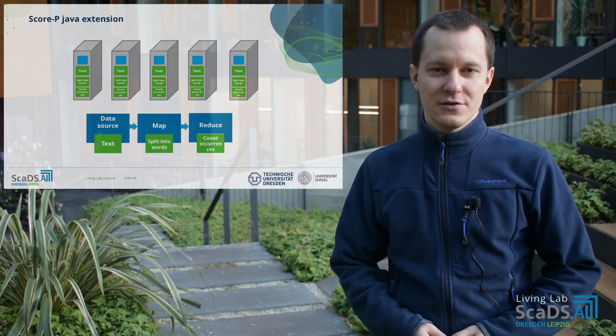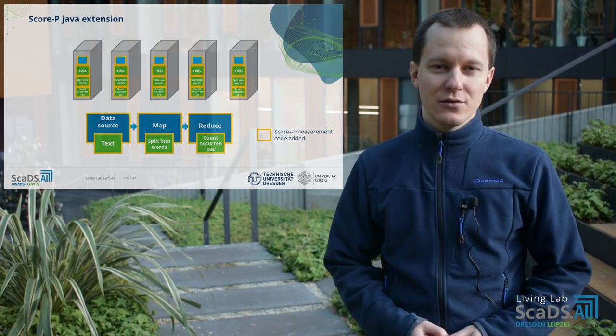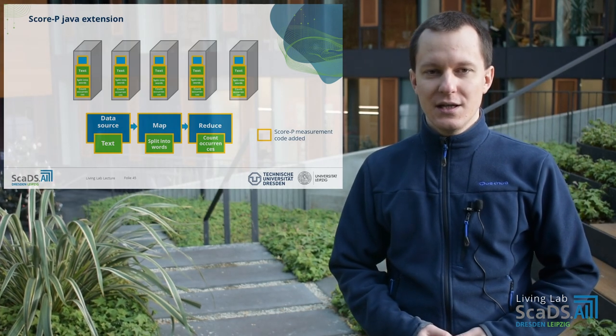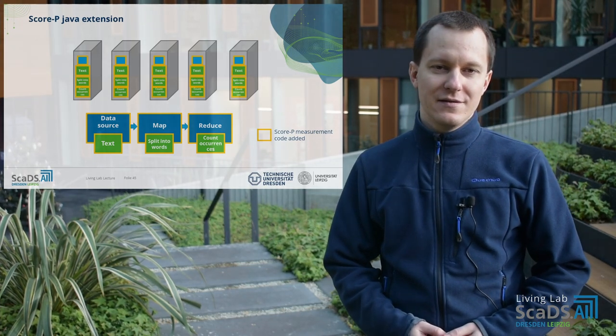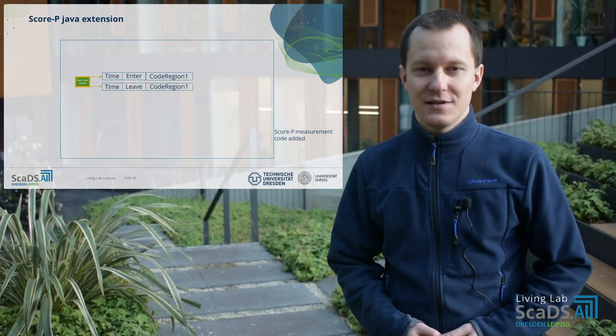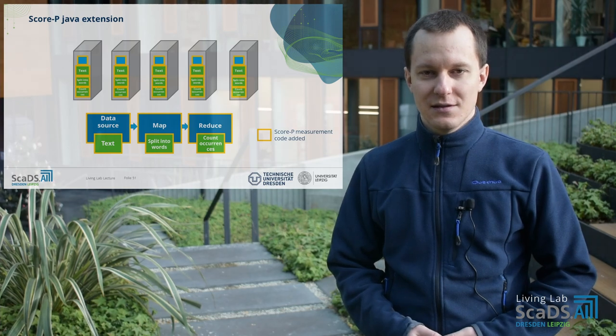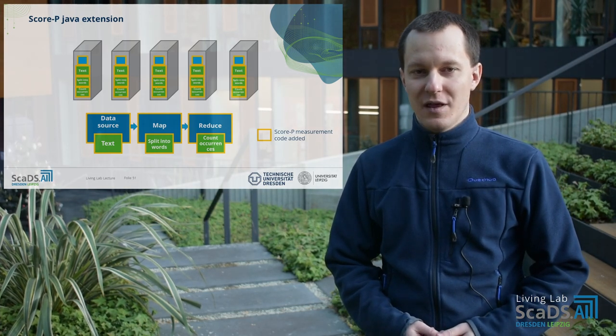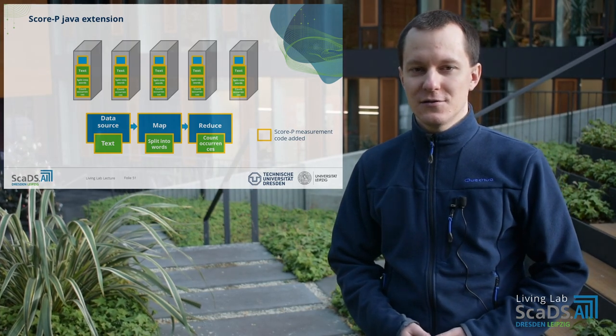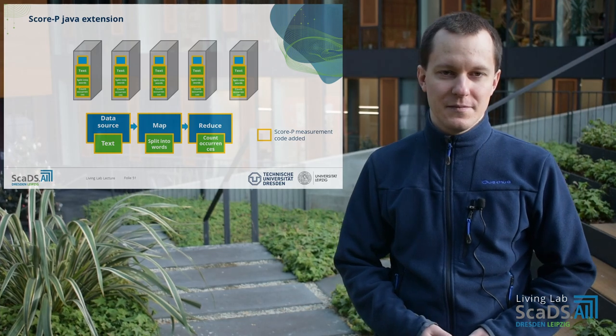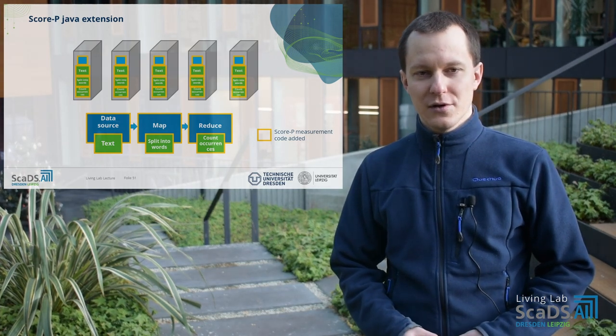Thus, we extended Score-P so that we could easily add measurement code to applications based on Java technology. The measurement code is essentially code to emit different kinds of events, such as for the beginning and end of execution of a method or thread. When the measurement code runs, each of the emitted events also contains a timestamp, so that we have the exact time when a method was executed. Because we could select the method we are interested in and add measurement code specifically to this method, we keep the overhead low while also being able to incorporate framework internal procedures in addition to the events that we get if we just track the user-defined functions.